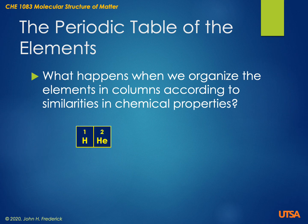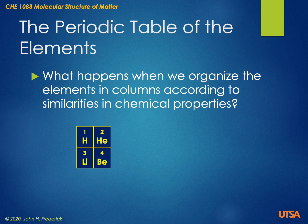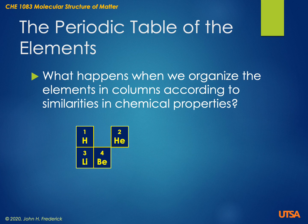Atomic number two is helium. We know that those two are very dissimilar, so they're not going to be in the same column. When we get to the third element, lithium, it actually has some chemical similarities to hydrogen — they both form a plus-one ion and form very similar compounds. A problem happens when we get to number four, beryllium — it's not like helium at all. So we have to adjust our arrangement and move helium over. Going forward, the next element similar to lithium and hydrogen doesn't appear until element number 11, which is sodium.